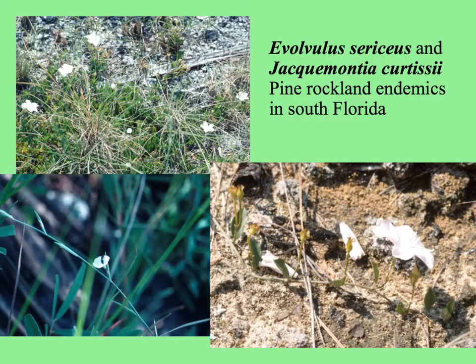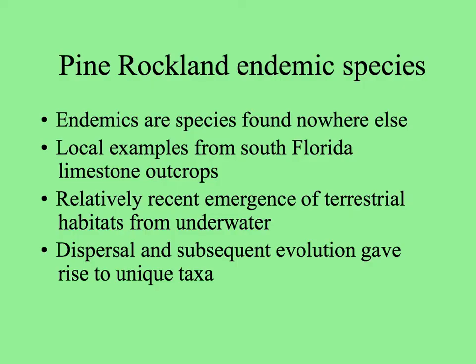In the upper left-hand picture, you can see the bigger Giacomontia and the tiny Evolvulus flowers. So these endemic species are found nowhere else. Our local examples of endemics tend to be from our limestone outcrops — probably because they're a relatively young species that evolved after the recent emergence of the land from underwater. Related taxa colonizing this new land and subsequent evolution gave rise to unique taxa found only here.